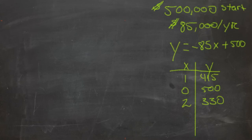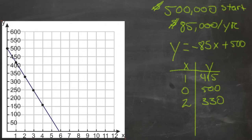If we take this information and graph it on an actual graph, it looks like this. Take a look at the scale we chose here — if we were to put y as one, two, three, four, five, six, seven, eight like we do with x, this graph would be right at the top of the screen and you'd never see the numbers.